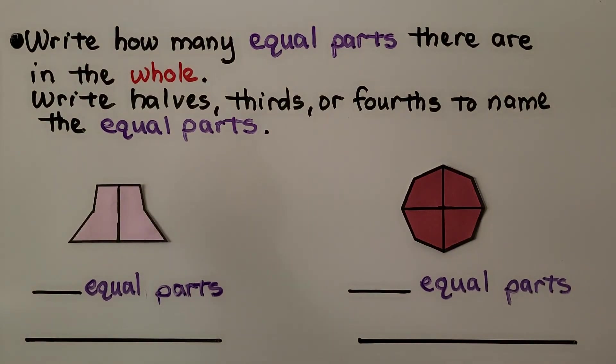Here it's telling us to write how many equal parts there are in the whole. Write halves, thirds, or fourths to name the equal parts. And we look at this shape,